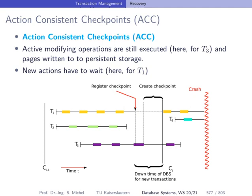The problem with transaction-consistent checkpoints is that we require the system to be down for quite some time, because we have to wait for the still-running transactions to complete. Action-consistent checkpoints try to improve on this.